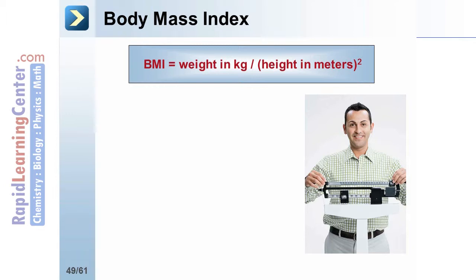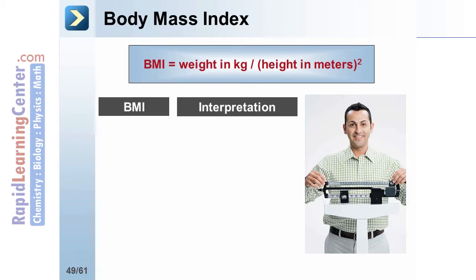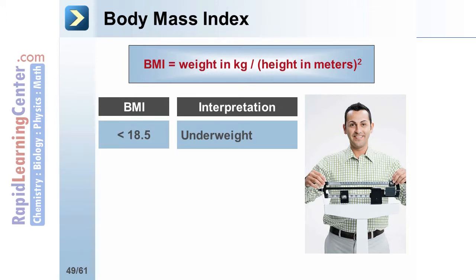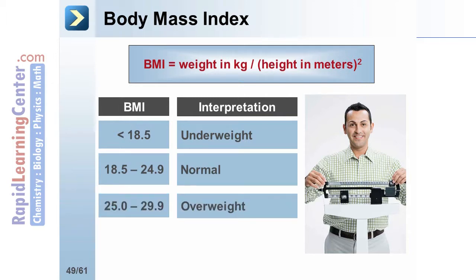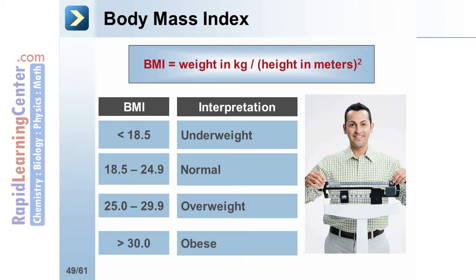The formula for BMI is: BMI equals weight in kilograms divided by height in meters squared. The interpretation of BMI values is that those under 18.5 are underweight, from 18.5 to 24.9 are normal, from 25 to 29.9 are overweight, and greater than 30 are obese.